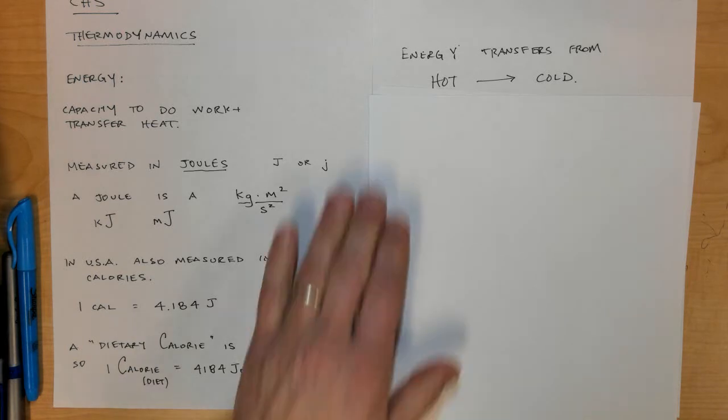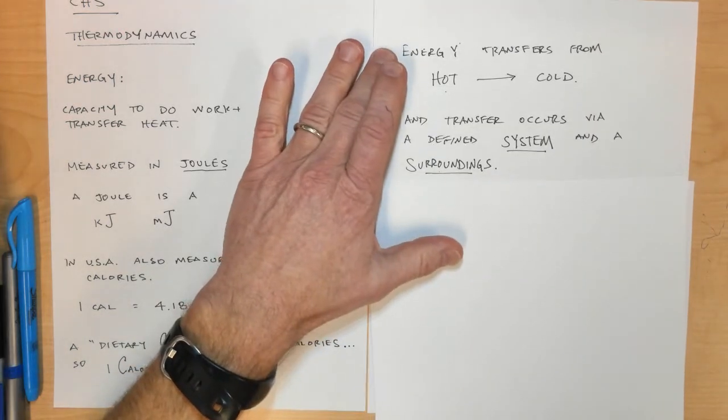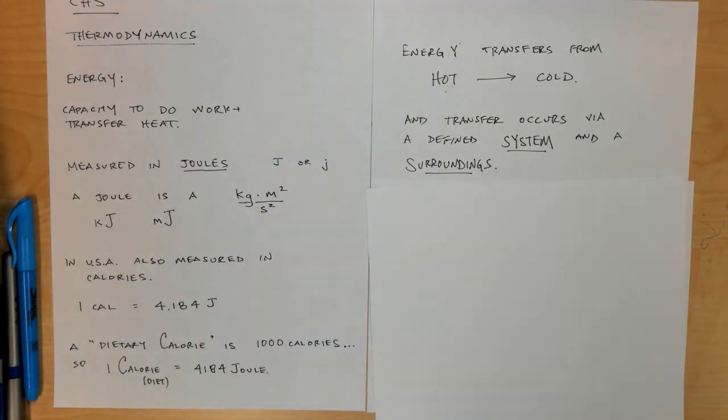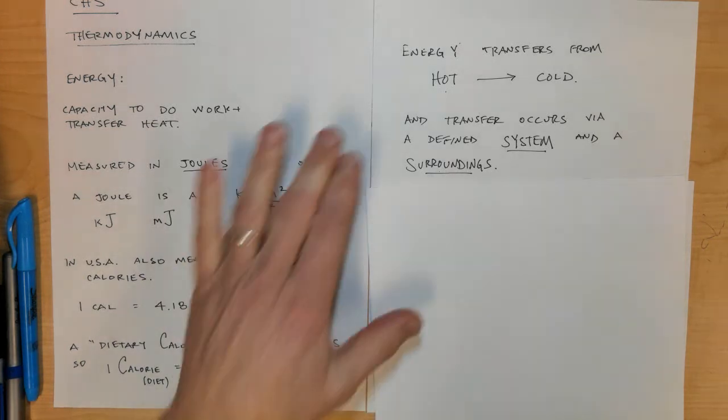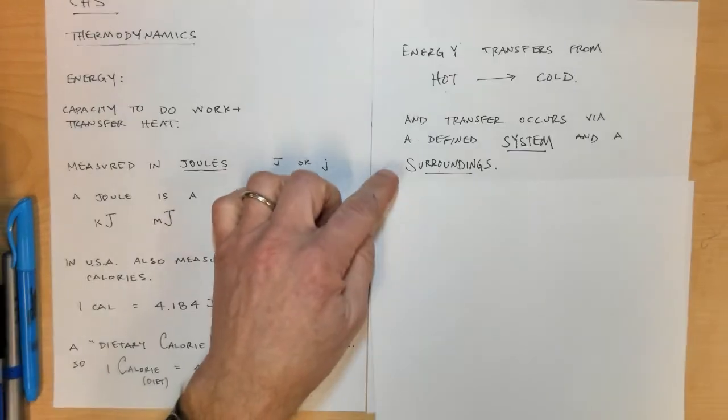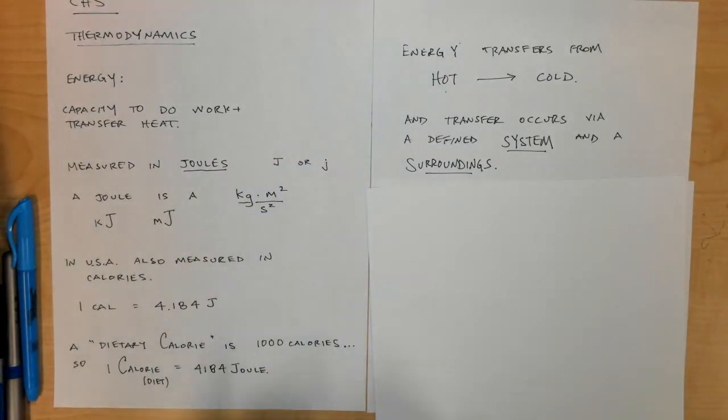The transfer always occurs via a defined system and surroundings. We define the system in chemistry class as the atoms, molecules, or ions that make up the sample of whatever substance we're studying.